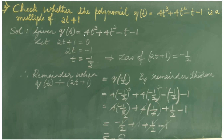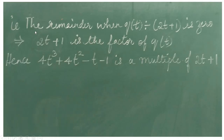Therefore, the remainder when q of t is divided by 2t plus 1 is equal to 0. This implies 2t plus 1 is a factor of q of t. Hence, 4t cube plus 4t square minus t minus 1 is a multiple of 2t plus 1.